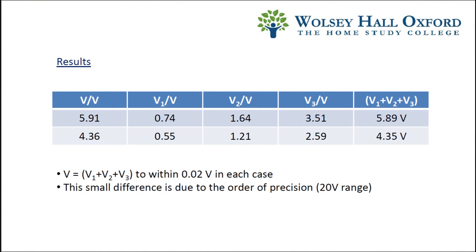Here is a summary of the results. The potential difference across the cells, V, is equal to the sum of the potential differences across the resistors. The results show that this is true to within 0.02 volts in each case. You'll notice that the sum is a little bit smaller than the potential difference across the cells. This is because the multimeter tends to truncate.